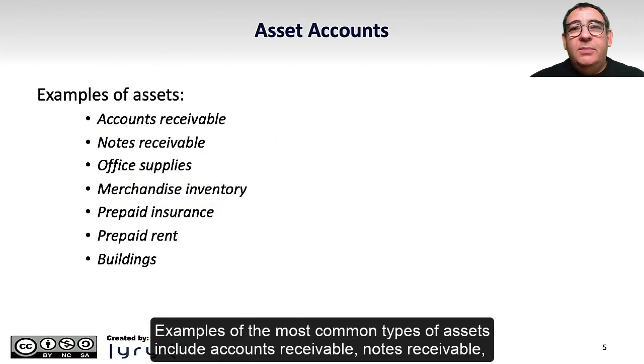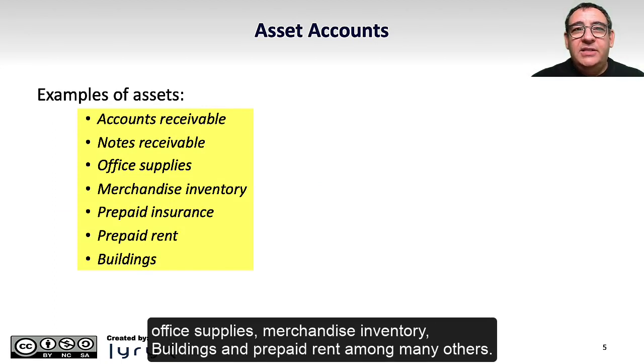Examples of the most common types of assets include accounts receivable, notes receivable, office supplies, merchandise inventory, buildings, and prepaid rent, among many others.